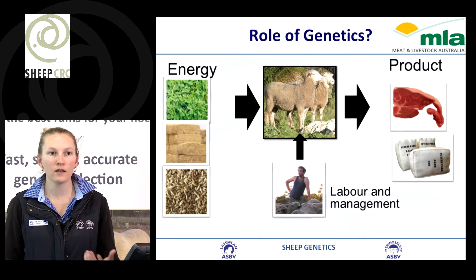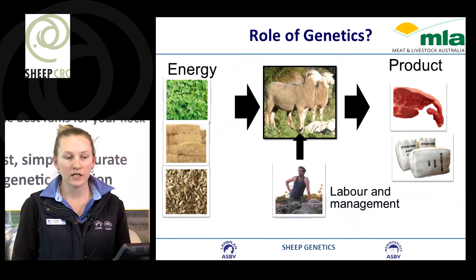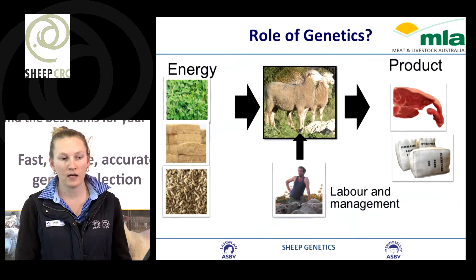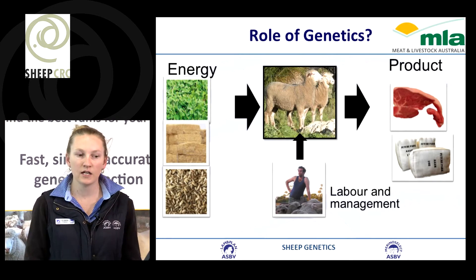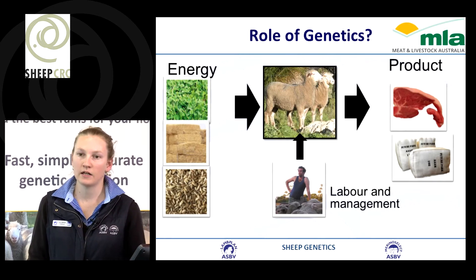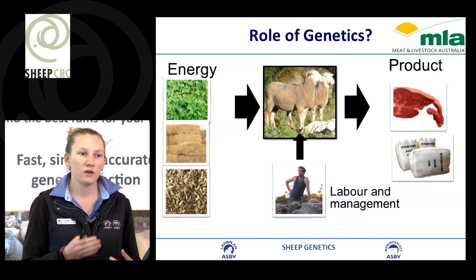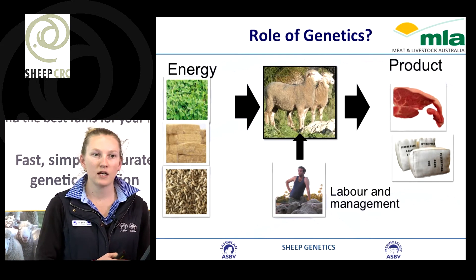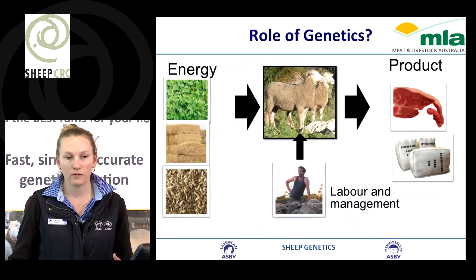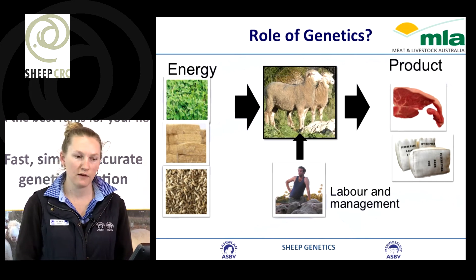If we think about the role of genetics, what we're essentially doing is taking energy, transferring that into our sheep, and then producing a product at the other end. If we have better genetics on board, the way that we do that in a productive and efficient manner is going to be better, and the product we're getting at the end is closer to what we're trying to achieve.